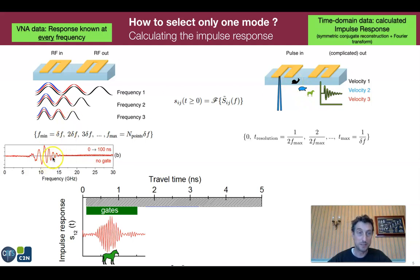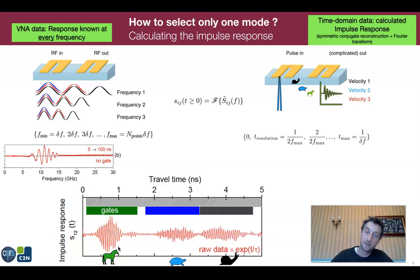For instance, if we use this spectrum that I've shown several times and we calculate the impulse response, signal versus time, we indeed have a first wave packet arriving before the first nanosecond. These are the fast spin waves. If you're patient, you will see the slow spin waves and very slow spin waves arriving after.